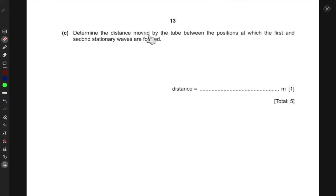Part (c): Determine the distance moved by the tube between positions at which first and second stationary waves are formed. For the first stationary wave, if the water is here and this is the speaker, we see something like this: an antinode and a node. This distance is lambda over four.